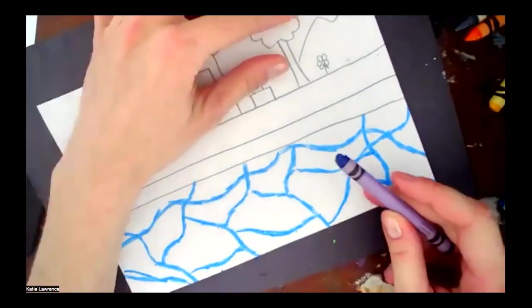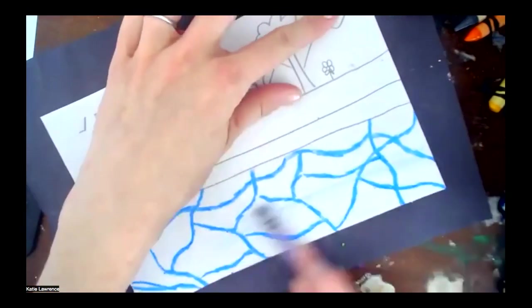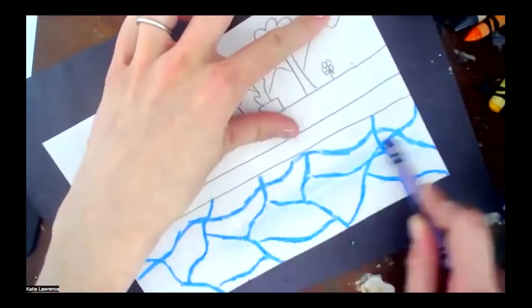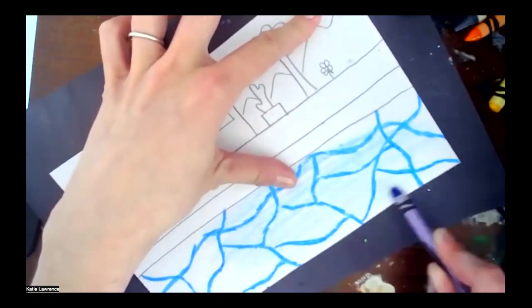Then when you have lots and lots of wavy lines that you pressed really hard with, then you can press lightly and color on top. It'll look like how the water looks in the pool and the sun today.